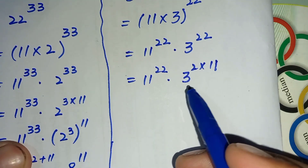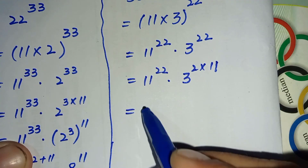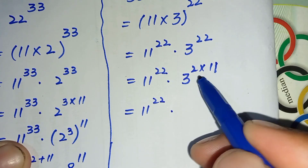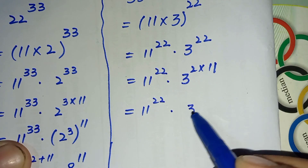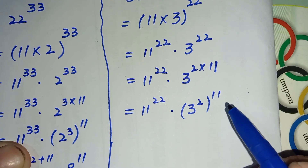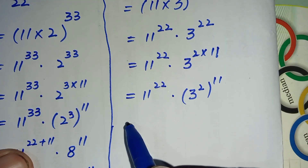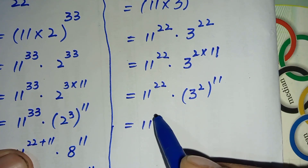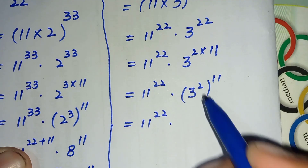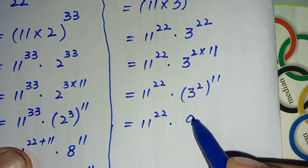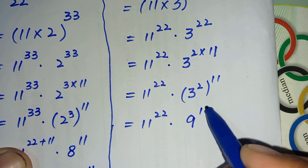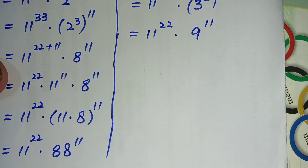Further simplifying this term: 11 to the power 22 multiplied by 3 raised to the power 2, whole raised to the power 11, by using an exponential formula. In the next step, 11 to the power 22 multiplied by 3 to the power 2, which gives 9, because 3 times 3 gives 9, raised to the power 11.